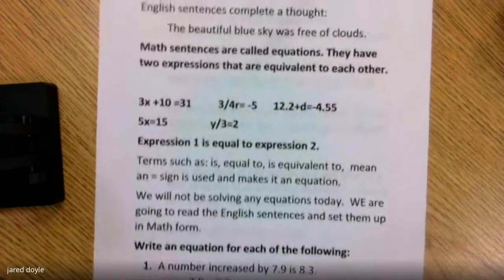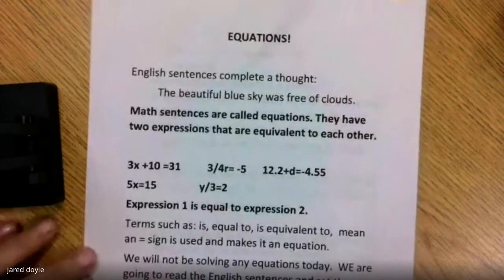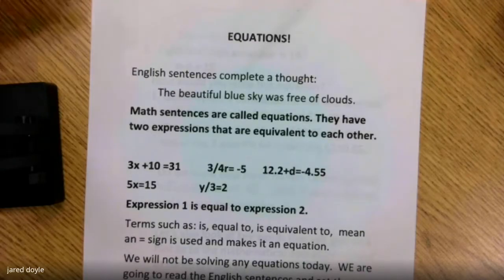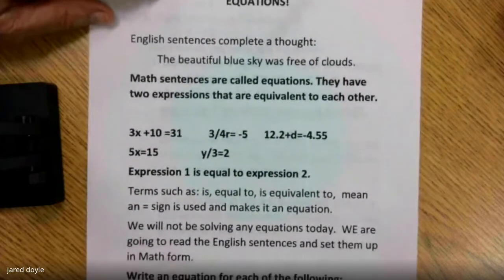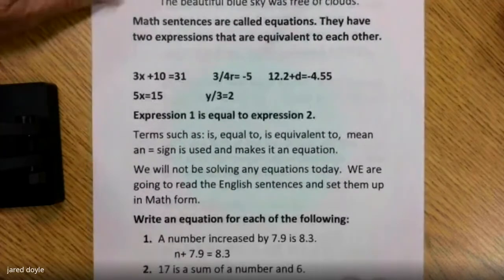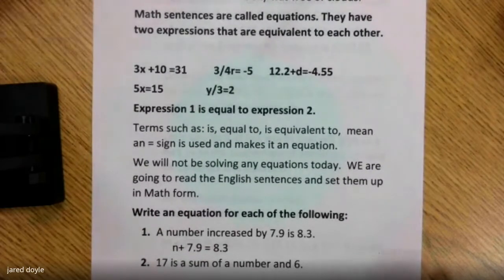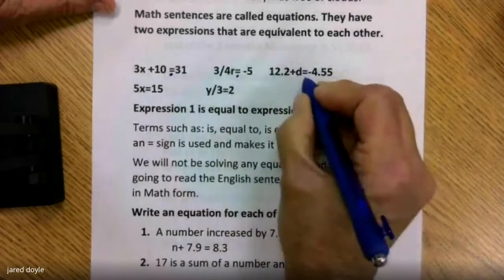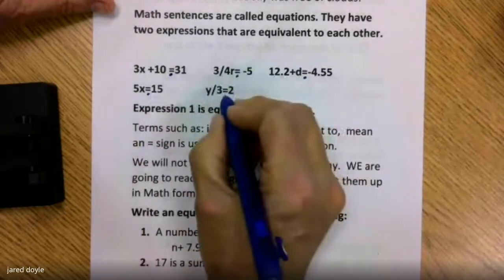Let's go to equations now. Equations in English form a complete thought. Look at the sky example: 'The beautiful blue sky was free of clouds.' Math sentences are called equations — they have two expressions that are equivalent or equal to one another. Notice each one of them has an equals mark, which completes the sentence.